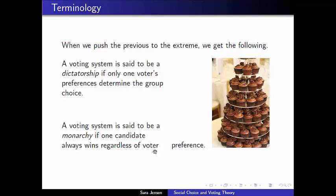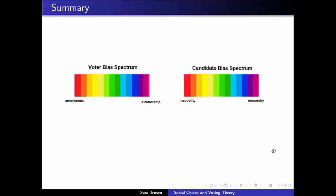This is a system where every single voter preference is ignored. The voters are saying what type of dessert they want, but it's not that any of them has a tremendous amount of power — it's that the option they're asking for simply isn't available, and they're going to get a chocolate cupcake no matter what. The candidates being voted on have an unequal distribution of power, pushed to the extreme. So in summary: anonymity pushed to the extreme produces dictatorships, and neutrality pushed to the extreme produces monarchies.